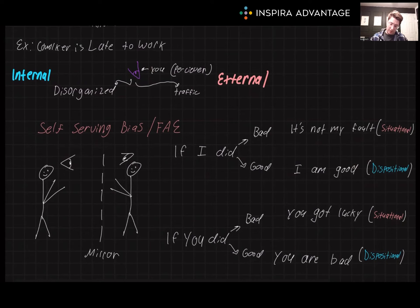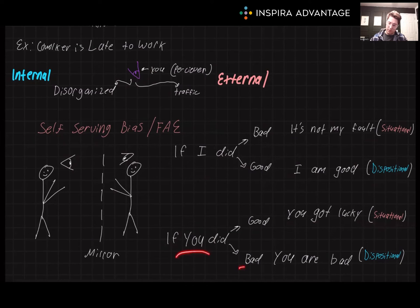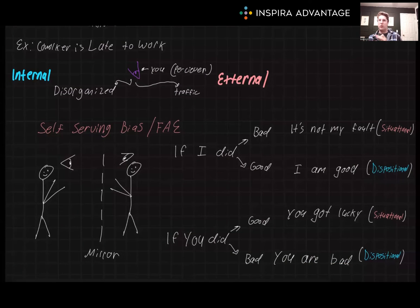However, if I am seeing somebody else do something bad, I'm more likely to blame it on them. If you do something good, I'd say it's just because you got lucky — a situational reason. Conversely, if I see you do something bad, I'd say you are fundamentally bad as a person with a dispositional attitude to be internally bad. You can think of it as: you put yourself in the best light and others in the worst light. This doesn't mean everybody does this all the time — it just means we are more likely to.